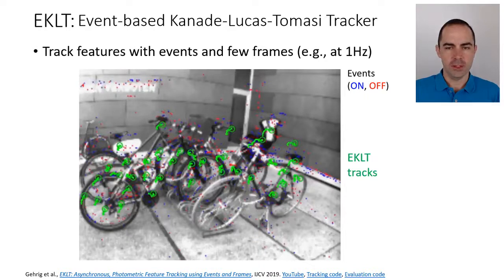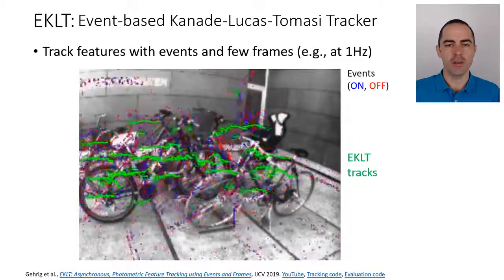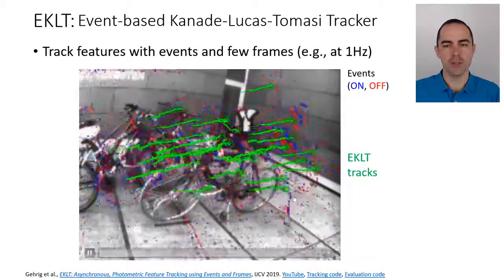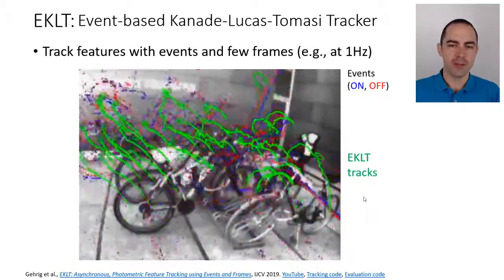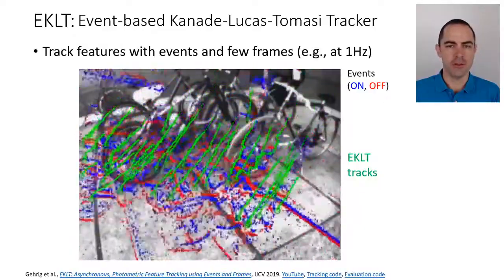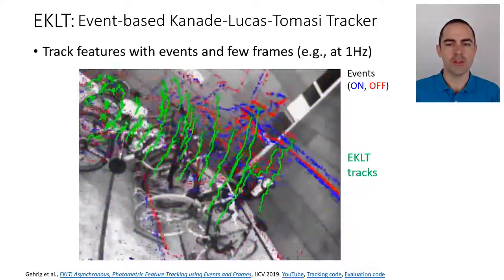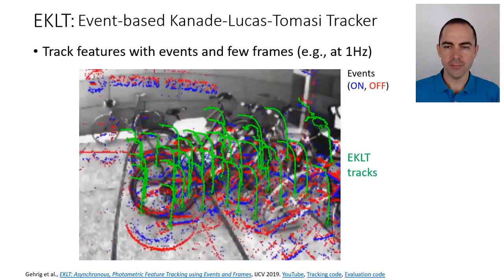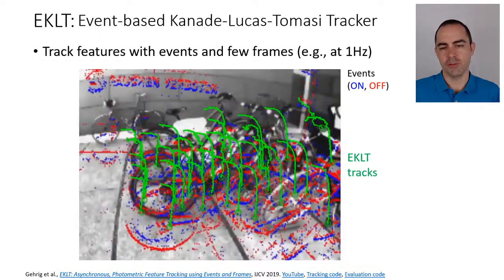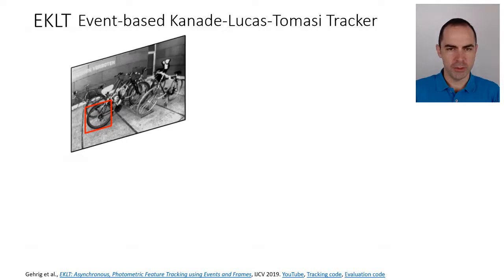As an example, imagine a scene acquired with a DAVIS sensor at one frame per second. Features tracked here are shown in green on the events. If some features disappear, new ones are created — features are constantly being re-initialized. We combine events and frames to provide tracking without needing 25 frames per second; one frame per second is enough, and in between we track using events.